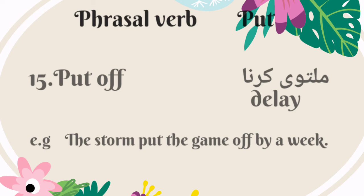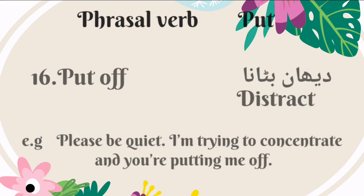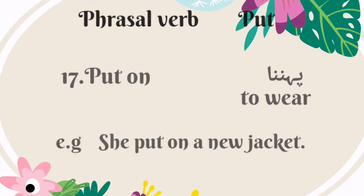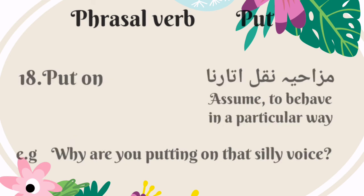The fifteenth phrasal verb is 'put off.' It means to delay — Urdu mein is ka matlab hoga multavi karna. For example: the storm put the game off by a week. The sixteenth phrasal verb is also 'put off,' meaning to distract — Urdu mein is ka matlab hoga dihaan batana. For example: please be quiet. I am trying to concentrate and you are putting me off. The seventeenth phrasal verb is 'put on.' It means to wear — Urdu mein is ka matlab hai pehanna. For example: she put on a new jacket. 'Put on' also means to assume or behave in a particular way — Urdu mein is ka matlab hai mazahiyya nakal utarna. For example: why are you putting on that silly voice?